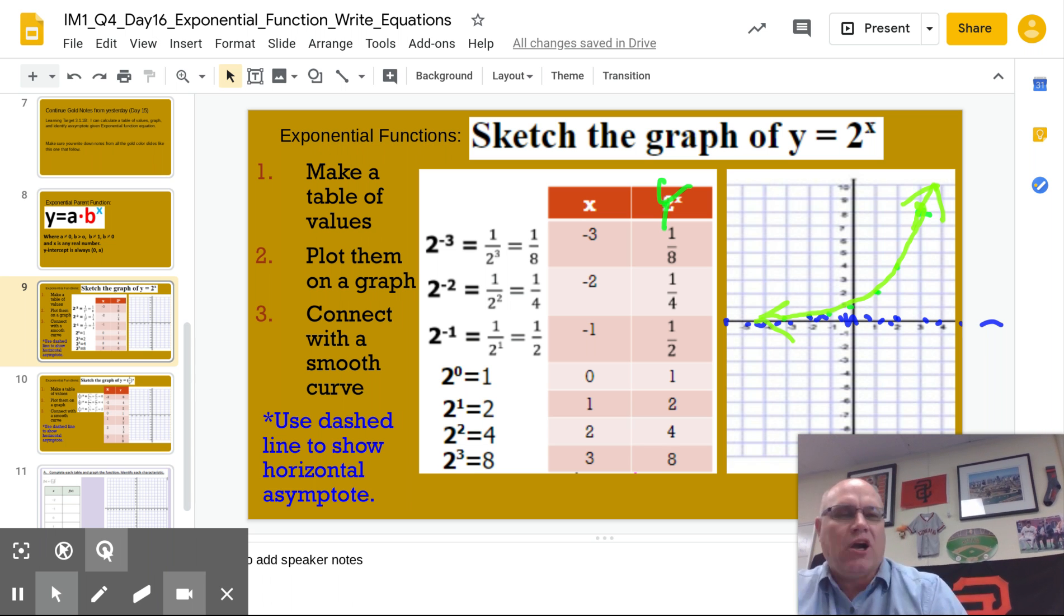The asymptote will not always be 0. It will today for our basic examples. But as we progress through this unit, you'll start seeing where the asymptote is at different levels. So you can have an asymptote at y equals 4 or y equals negative 8 and so on. That's a good first example.